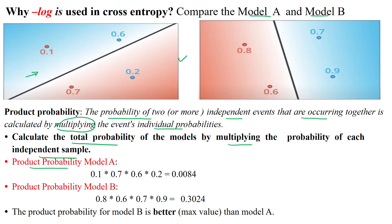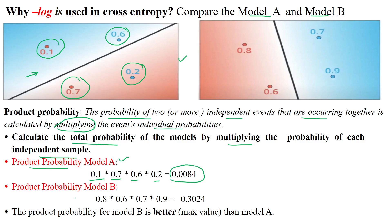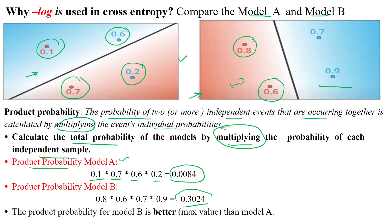We are calculating the product probability of model A across four samples with predicted values 0.1, 0.7, 0.6, and 0.2, giving us 0.0084. Model B predicts values for all four samples — where one class represents the positive class and the other the negative class. Taking the total probability of model B by multiplying all values gives 0.3024. Since model B gives the maximum value, we conclude model B is better than model A.